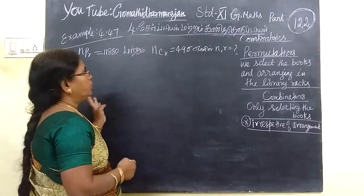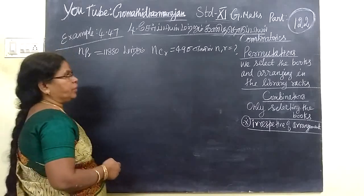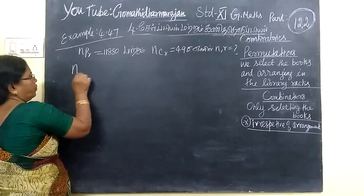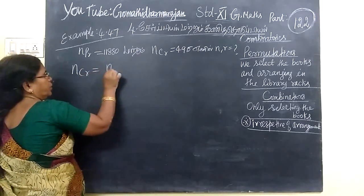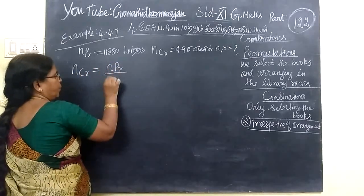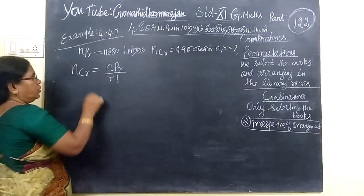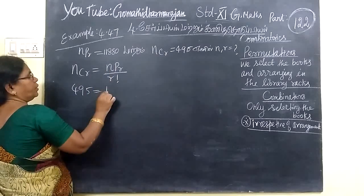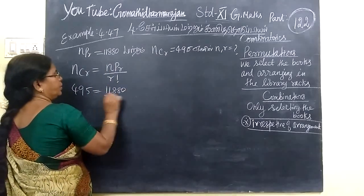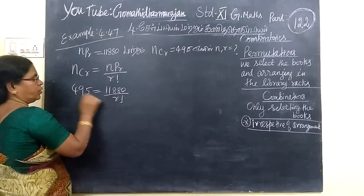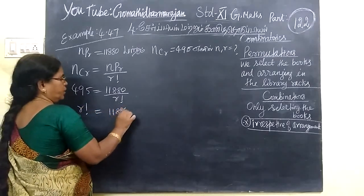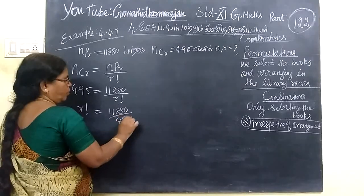Here you have given NCR and NCR. You have to find the value of N and R. You know the formula NCR equals N factorial by R factorial. NCR is 495, NCR is 11880 by factorial. Cross multiplication, R factorial equals 11880 by 495.